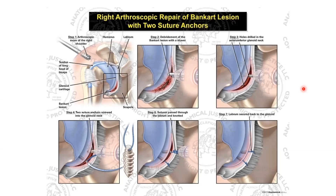For the McLaughlin technique for locked posterior dislocation: if the head is not viable — chronic more than six months — do hemiarthroplasty. If the head is viable with good bone stock, do the McLaughlin technique to close the anteromedial defect of the humeral head. If there is bone loss on the posterior glenoid, a bone block is needed. The Imhoff series describes a corrective osteotomy of the scapula version — correcting glenoid version — to address posterior instability.